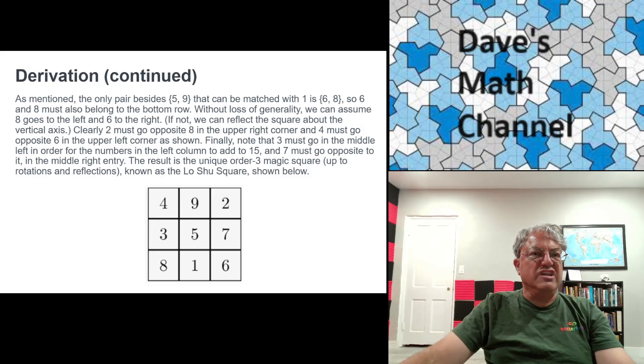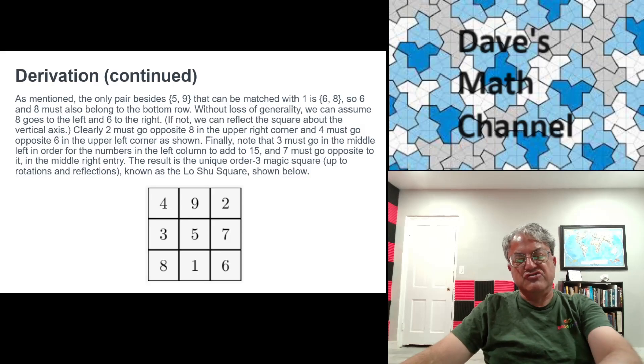It turns out there's 880 4 by 4. I'll probably do another video on that later. But the number of possible magic squares of order n grows very, very fast. And I think the number is only known up to order 5. Already by order 5, I think it's in the millions, maybe in the billions. But anyway, there's a lot of them, but it's unique for order 3. It's the Lo Shu Square.